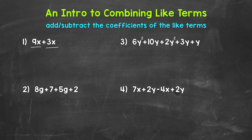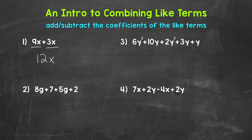Now when we combine like terms, all we need to do is add or subtract the coefficients — the numbers in front of the variables. The coefficients in number one are 9 and 3. We have a positive 9x plus a positive 3x, so let's add those coefficients. 9 plus 3 is 12, and then we have the variable of x. We took those two like terms, 9x and 3x, and combined them into one term: 12x. 12x is equivalent to 9x plus 3x, so we didn't change the value of the expression. So 12x is our final simplified expression.